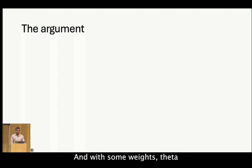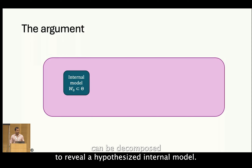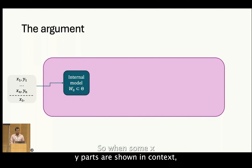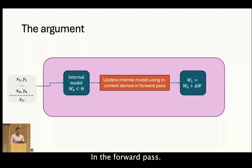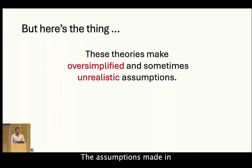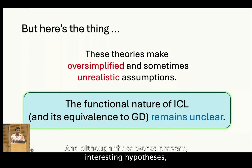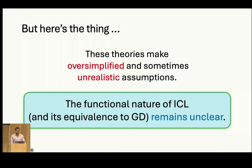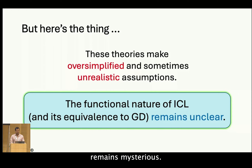So the argument is the following: an LLM with some weights theta can be decomposed to reveal a hypothesized internal model. When some X-Y pairs are shown in context, the LLM learns to extract the training pairs and uses them to update the internal model with gradient descent in the forward pass, then uses the updated model to perform inference on the new X. But the assumptions made in these studies may be oversimplified and sometimes unrealistic. Our position is that the true functional nature of ICL and its equivalence to traditional learning methods like GD remains mysterious.